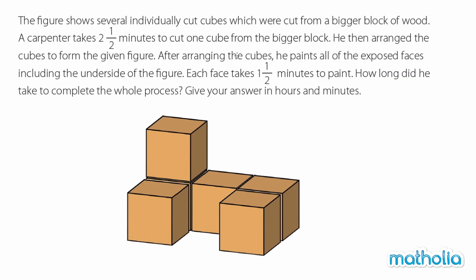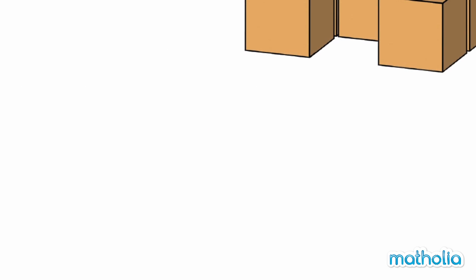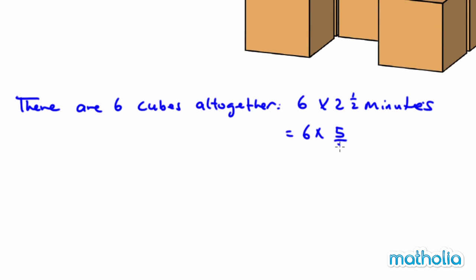First, to cut from a bigger block to the cube, it took two and a half minutes to cut one cube. We can see there are six cubes altogether. So it will be six multiplied by two and a half minutes. This will give me six multiplied by five over two, and it will be fifteen minutes.